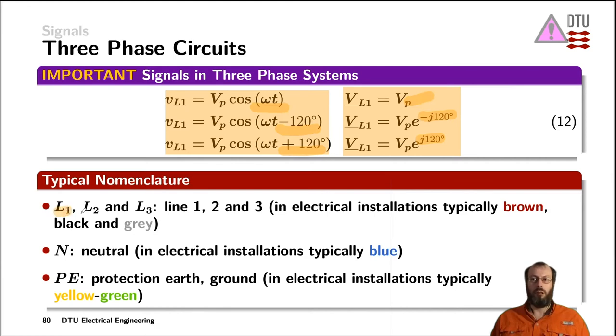So practically those three lines are typically called line one, line two, and line three. In electrical installations those are often brown, black, and grey. Sometimes they also are black only and have different markings on the wire.